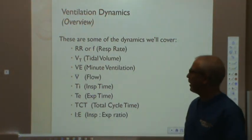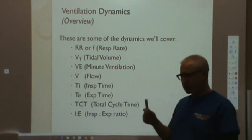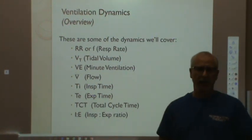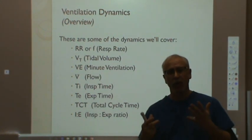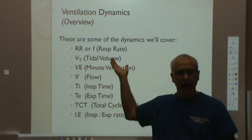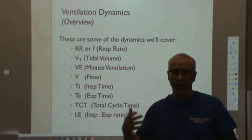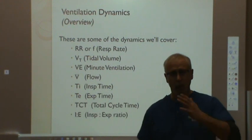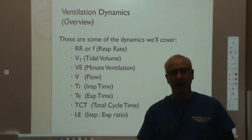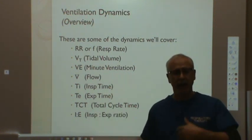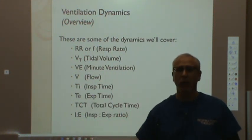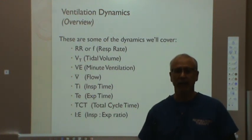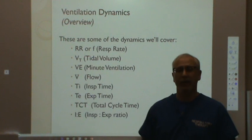In a nutshell, the ventilation dynamics we're going to be looking at are: respiratory rate, tidal volume, minute ventilation, flow rate, TI and TE, total cycle time, and the IE ratio. When the patient is breathing spontaneously or on a mechanical ventilator, all of this is happening in the background. As you watch this video, you are breathing spontaneously and all of this is occurring right now. The exact same thing — and more — occurs when we're ventilating patients on mechanical ventilators.